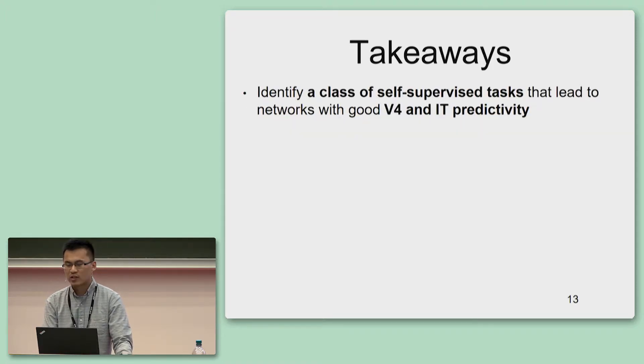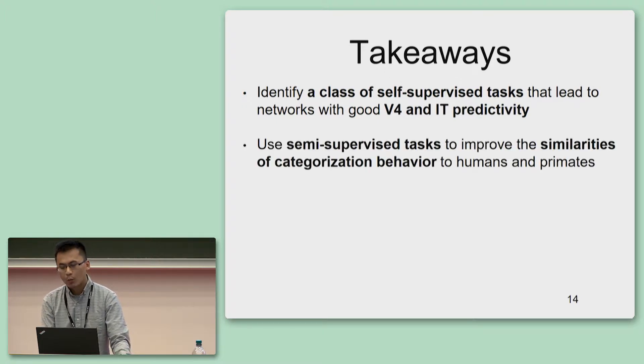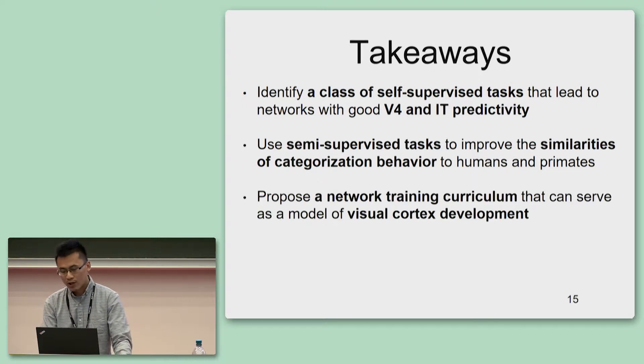The takeaways are that we successfully identified a class of label-free tasks, namely self-supervised tasks, that lead to networks with good V4 and IT predictivity. Moreover, we further trained the networks with semi-supervised tasks and improved their similarities to human and primate behaviors. Taking together, we propose a network training curriculum that can serve as a model of visual cortex development.